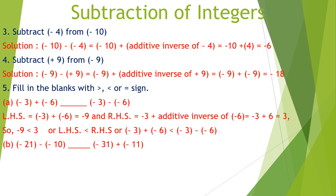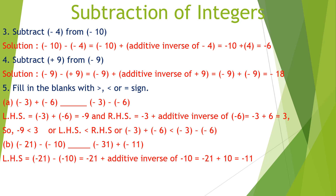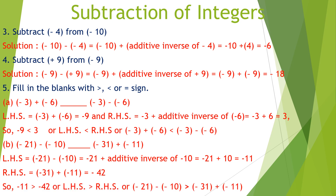Next: minus 21 minus minus 10 versus minus 31 plus negative 11. The left hand side: minus 21 plus additive inverse of minus 10 equals minus 21 plus 10, equals minus 11. The right hand side: minus 31 plus minus 11 equals minus 42. Since minus 11 is greater than minus 42, we write the greater than sign.